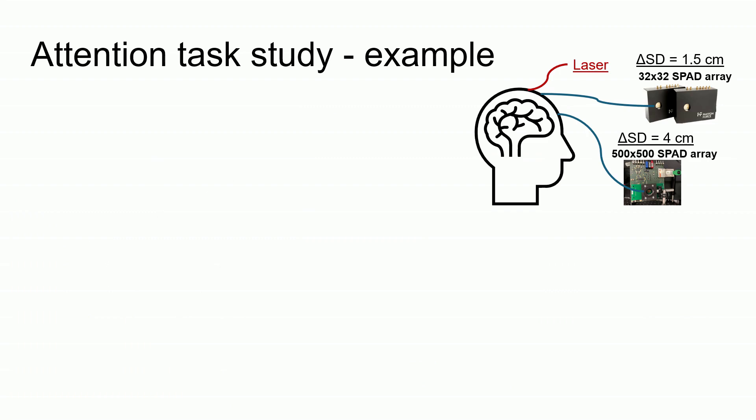Here is an overview of what an experiment using DCS has looked like in our lab so far. For a given subject, a fiber coupled to a laser was placed onto the subject forehead. A detector fiber coupled to one detector was placed 1.5 cm away from the laser, which will exclusively measure scalp blood flow.